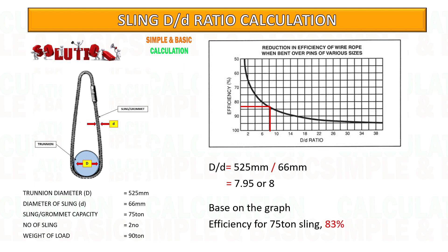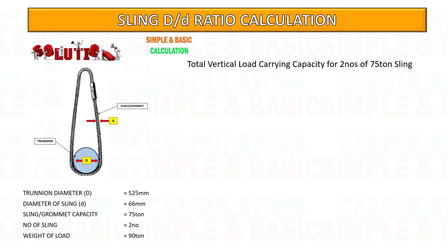Based on the graph, sling efficiency is 83 percent of its capacity. After getting the answer for percentage reduction, now we can check how much load is safe to carry by the sling after reduction factor. See the below calculation; you can pause the video and follow the calculation.